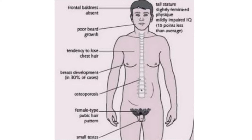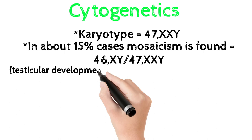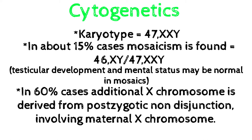Cytogenetics: karyotype 47XXY. In 15% of cases, mosaicism is seen — 46XY and 47XXY. Testicular development and mental status may be normal in mosaics. This XXY karyotype is due to non-disjunction of chromosomes, which may involve the maternal or paternal X chromosome.